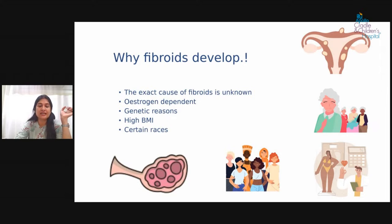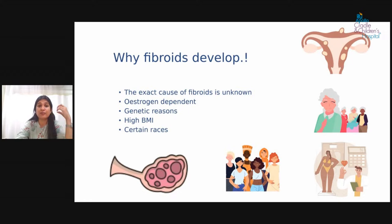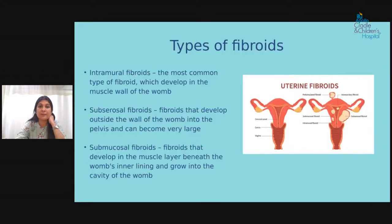Genetic reasons also play a role — if your mother, grandmother, or any family member has fibroids, you are more likely to develop them. High BMI is another factor because obesity causes fat to convert to estrogen, which promotes fibroid development. Fibroids are also more common in Black Americans and Africans. Ultimately, the exact cause remains unknown, but estrogen dependence is key.